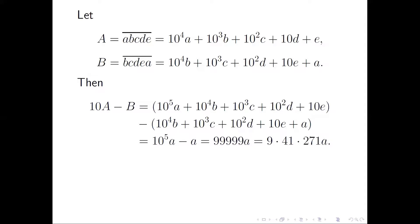We end up with 100000A minus A which is 99999A, and the 99999 is a multiple of 41.